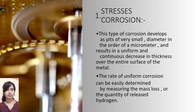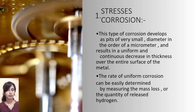Uniform corrosion. This type of corrosion develops pits of very small diameter in the order of micrometers and results in a uniform and continuous decrease in thickness over the entire surface of the metal. The rate of uniform corrosion can be easily determined by measuring the mass loss or the quantity of released hydrogen.